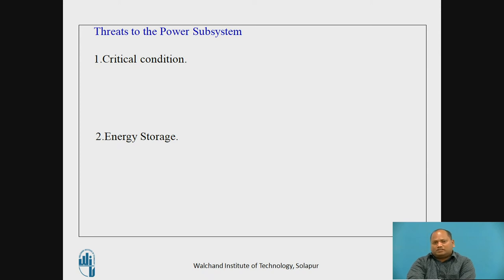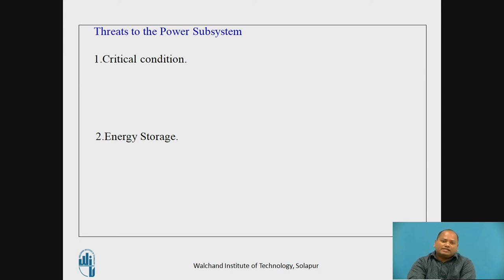Regarding energy storage, there are essentially two ways of storing electrical energy used on satellites, both relying on reversible chemical reactions. One is based on cells very similar to those found in portable phones. The other uses so-called fuel cells — a type of electrical accumulator now being used experimentally in cars and buses.